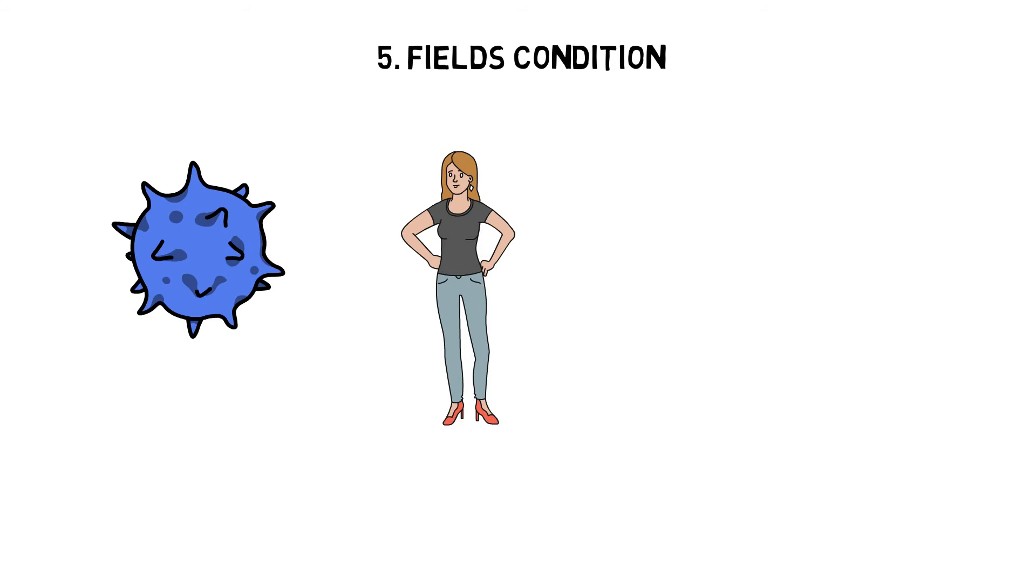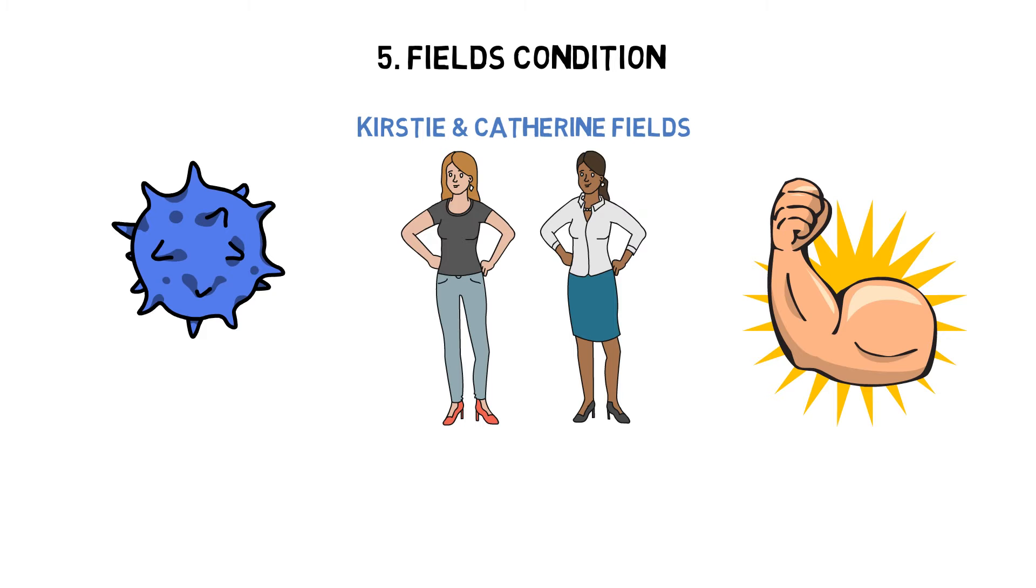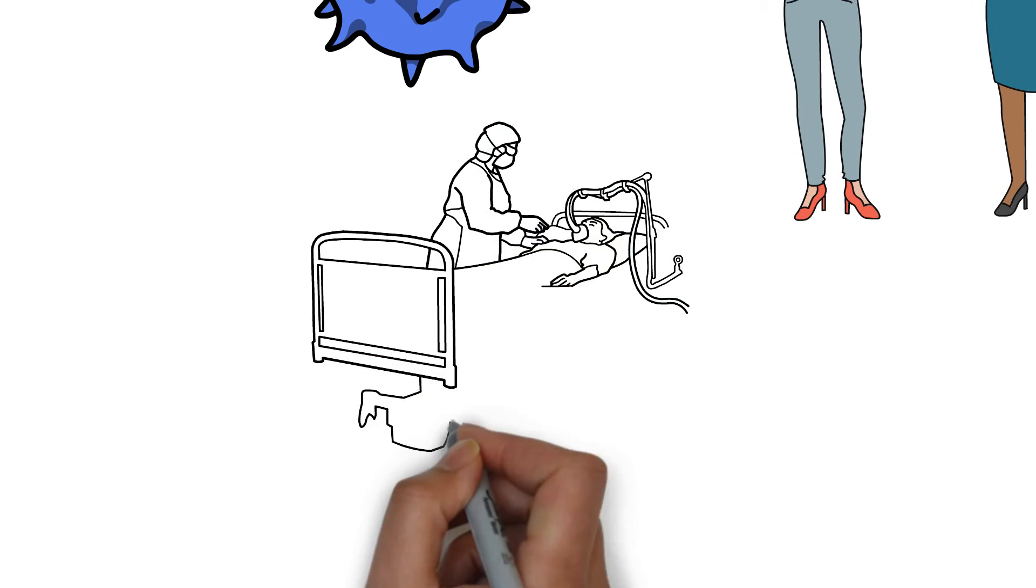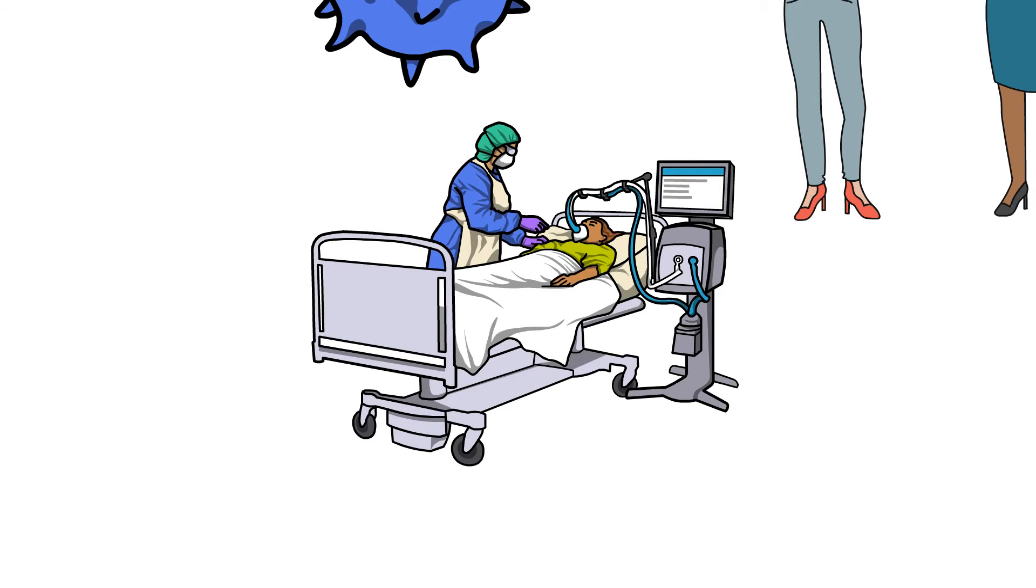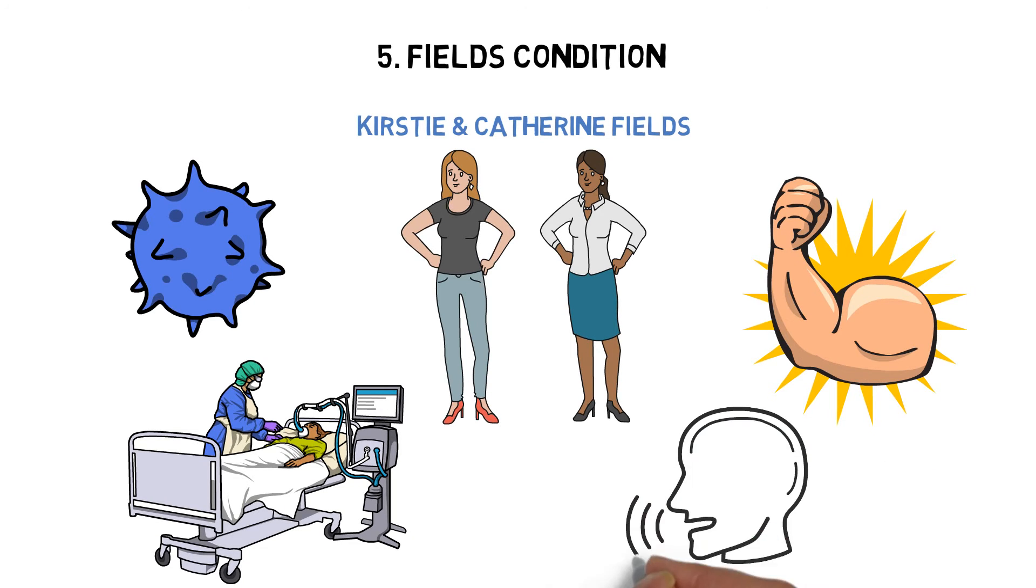Number 5: Fields Condition. We are definitely getting into the nitty-gritty of the world's rarest diseases when we talk about Fields Condition, a progressive muscle disorder that affects only two sisters, Kirstie and Catherine Fields. It causes up to 100 muscle spasms every day, eventually deteriorating the muscles and limiting movements. The disease is still predominantly a mystery to doctors, but it left both sisters paralyzed and cut off their ability to speak, with the two now relying on electronic speech machines to communicate.